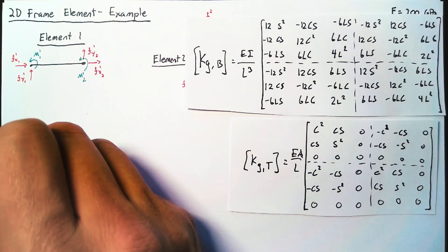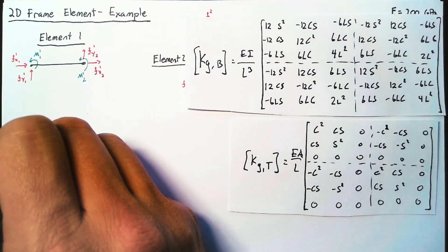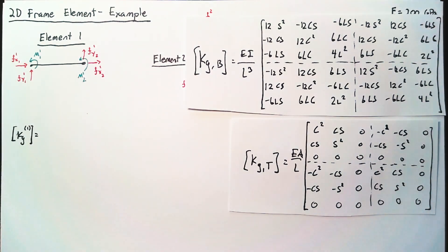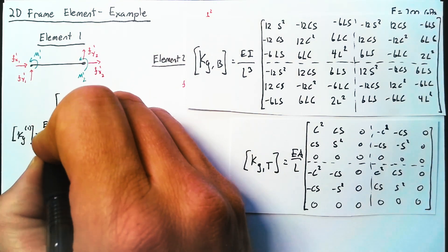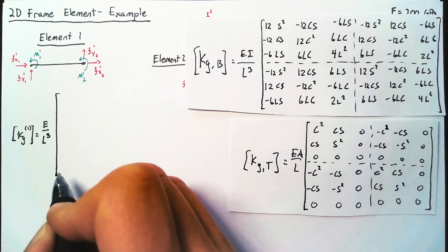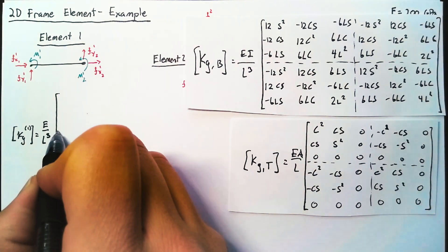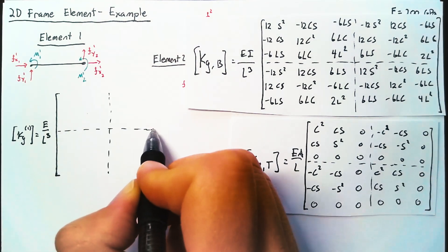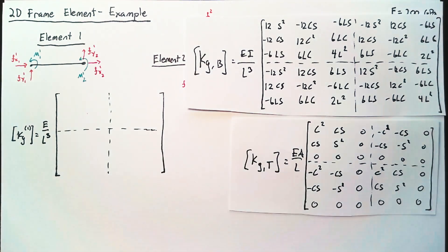Let's go ahead and start writing the stiffness matrix for element one. Now out in front, the easiest way to do this is to pull out an E over L cubed. And then we're going to have to distribute this I, and then we'll have to do something a little bit weird for the truss element just to make everything line up.